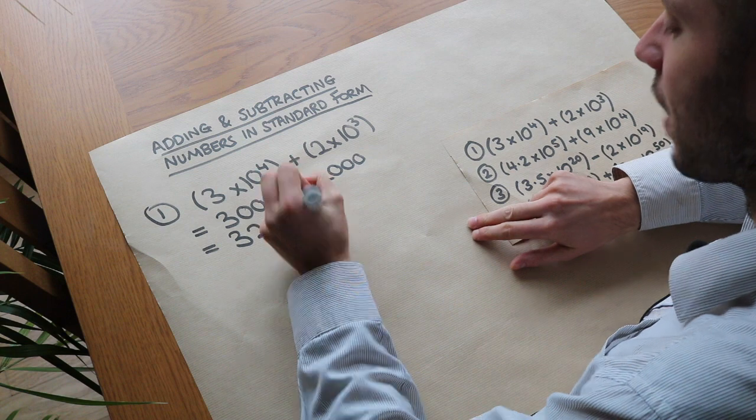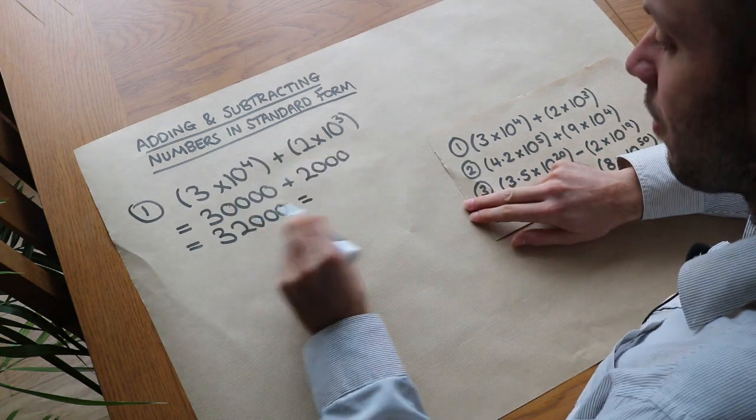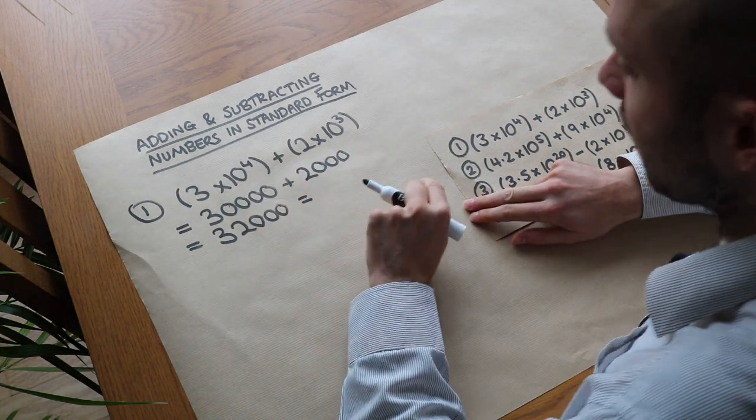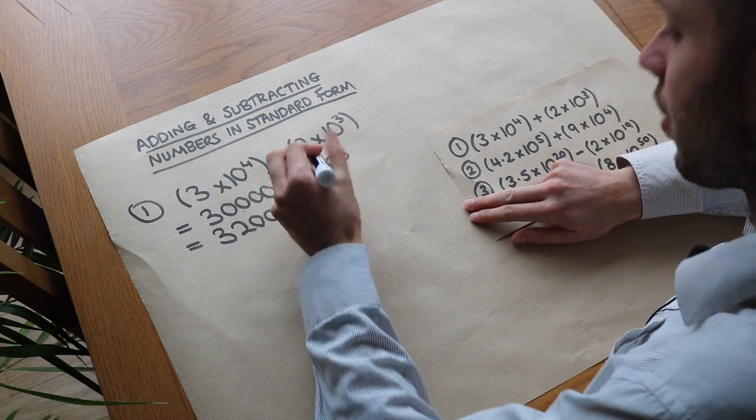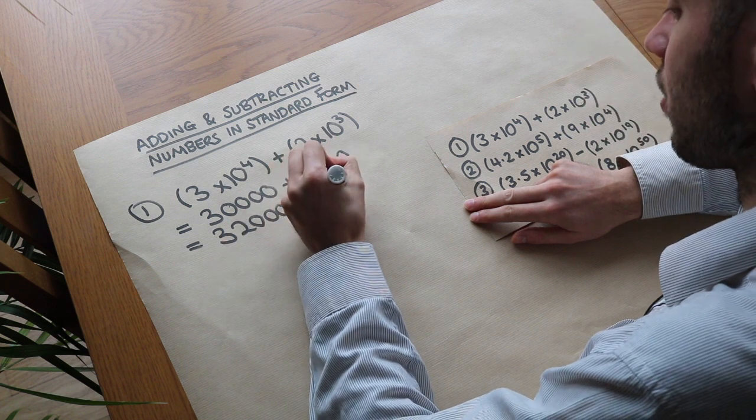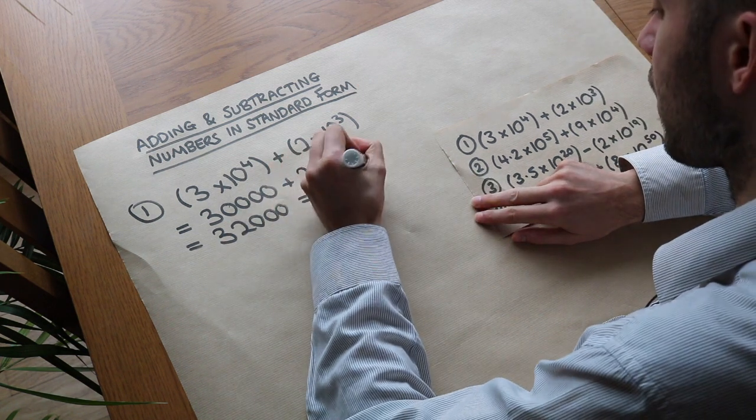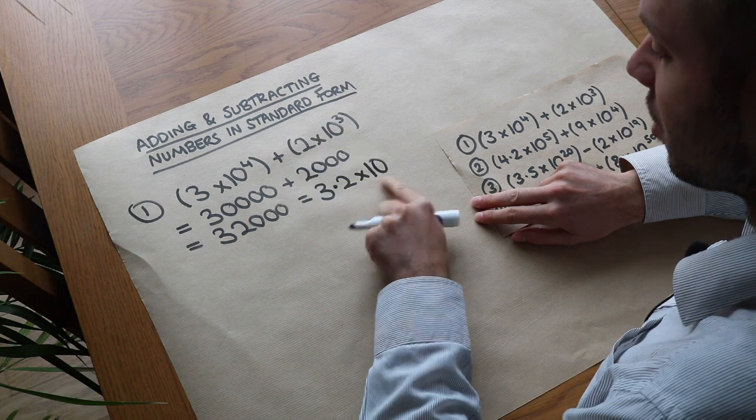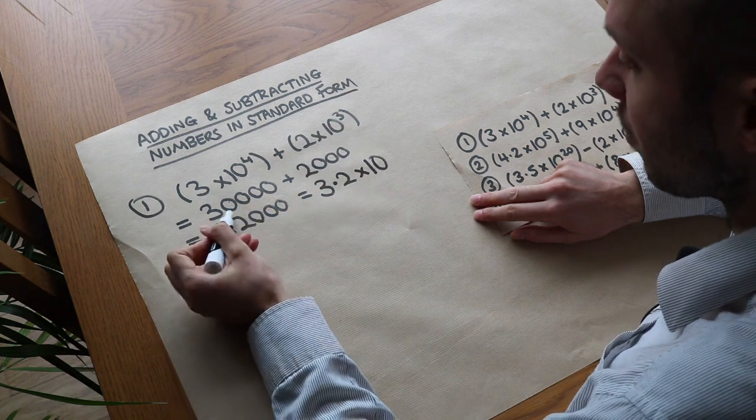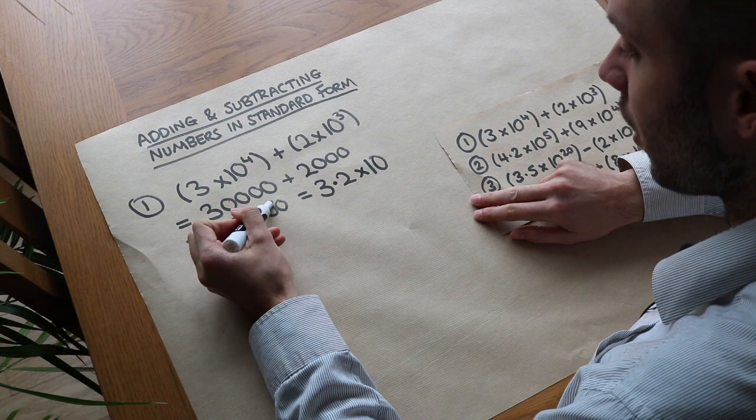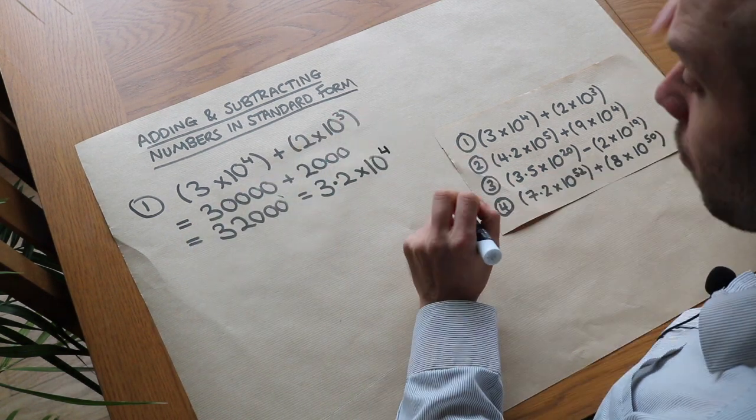And then we can convert that back to standard form. We need a number between 1 and 10 because that's how standard form works. So we'd use 3.2 using the digits on the front but as a number between 1 and 10. And then how many times have we multiplied by 10? Well the decimal point is here, it's 1, 2, 3, 4 times. So it's 10 to the power of 4.